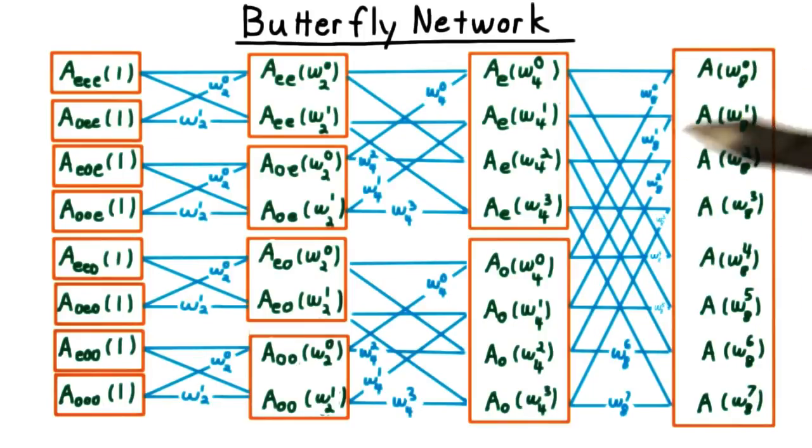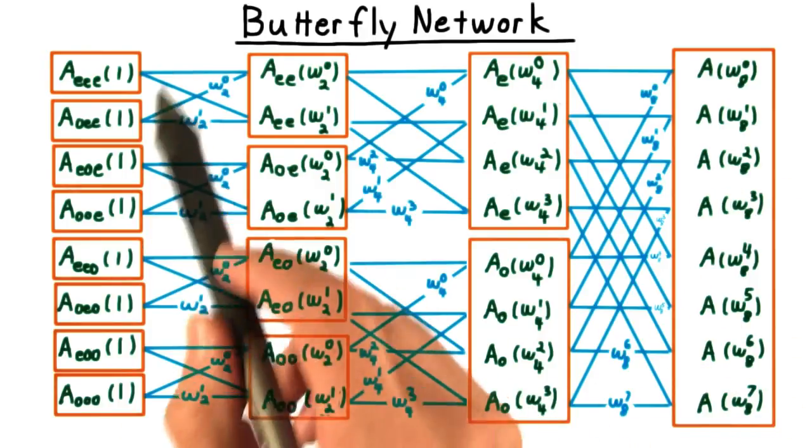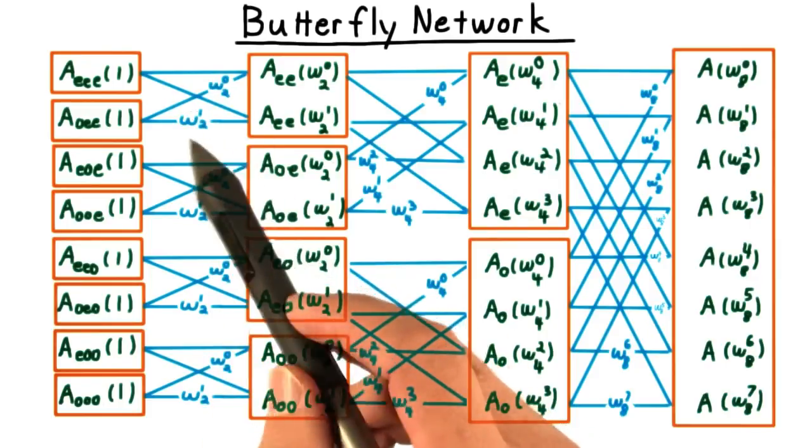Before moving on from this question of evaluation, I want to take another look at the connections between the various subproblems. This network is called a butterfly network because the connections on the left look a little like a butterfly.